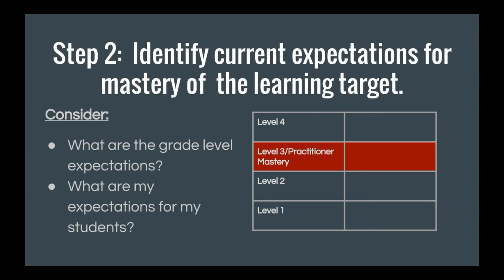After you have chosen a learning target and unpacked it, the next step is to identify the current expectations for mastery of that learning target. When you're developing a learning progression, you always want to start with the mastery stage — what are those grade level expectations for those students? This can be called level three or practitioner. Take a minute to write down your grade level expectations for mastery of the skill, concept, or standard that you're breaking down.